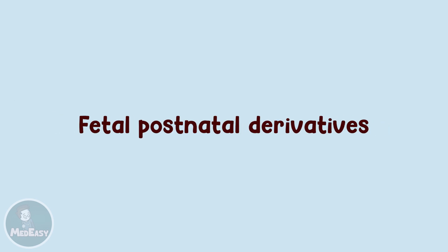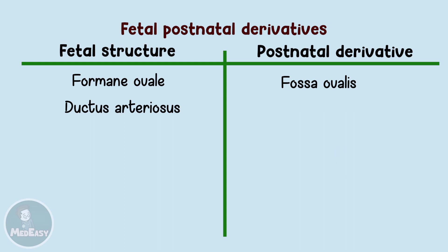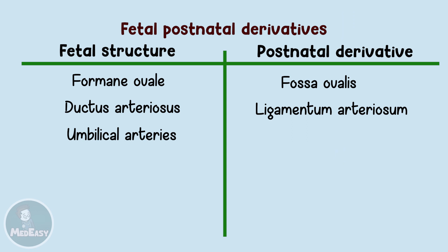Now let's talk about fetal postnatal derivatives. We already mentioned that foramen ovale will close leaving a depression in the heart called fossa ovalis, and that the ductus arteriosus will close and form the ligamentum arteriosum. We still have to talk about the umbilical arteries, the umbilical veins, and ductus venosus.